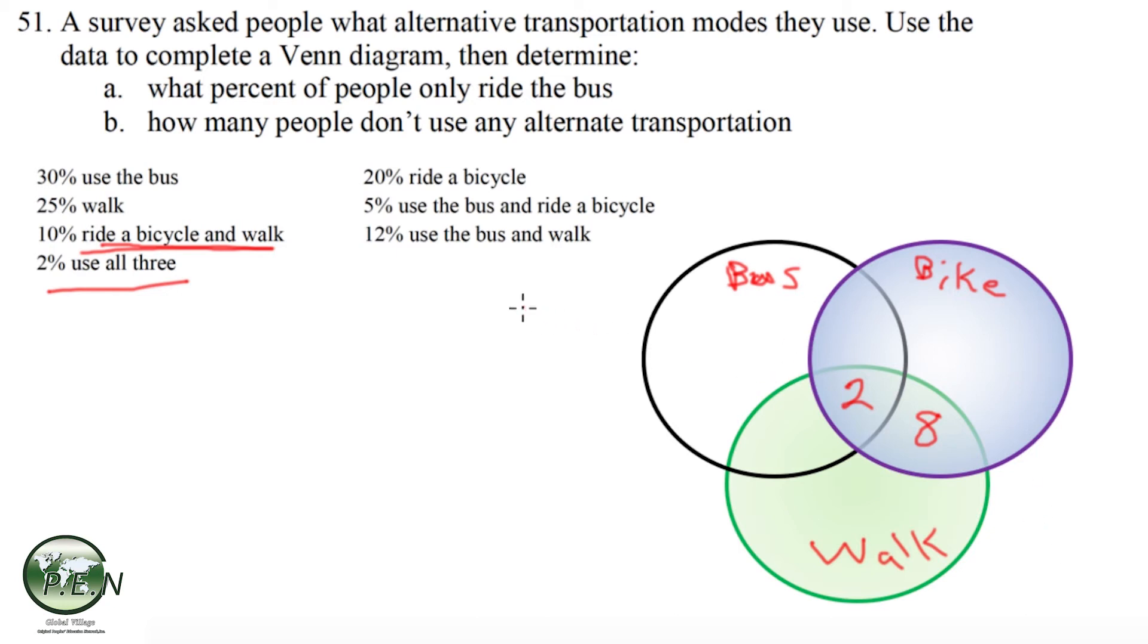We'll keep doing this looking for the regions that have two options: bus and walk, 12%, so 12 will go in this whole region. We've already counted 2 of them, so 12 minus 2 is 10. Bus and ride a bike, this whole region here has 5% or 5 people. We've already counted 2, so 5 minus 2 is 3 goes in this little region here.